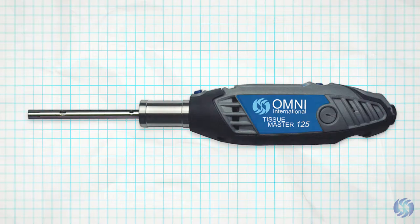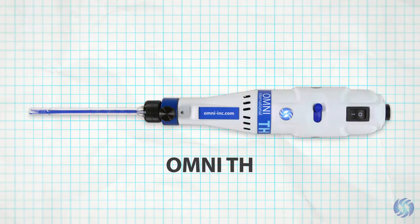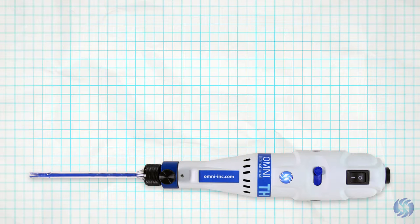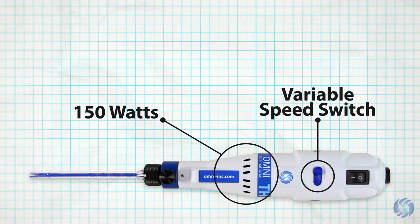The Omni TH, our most popular model, has a 20-year history of quality and reliability. The TH features 150 watts of processing power and a variable speed switch to reliably process virtually any sample up to 100 milliliters in volume.